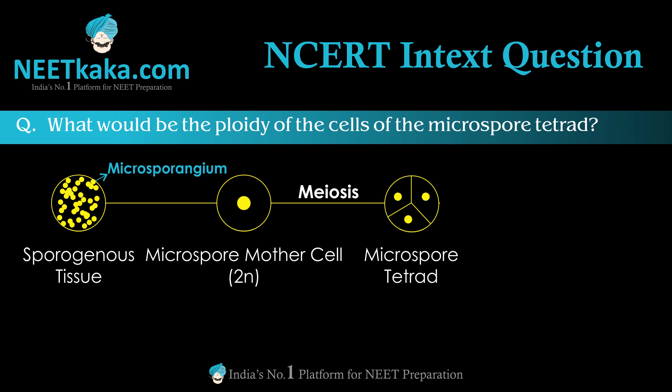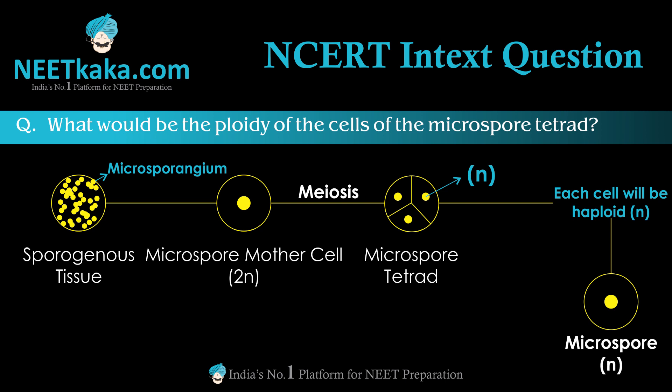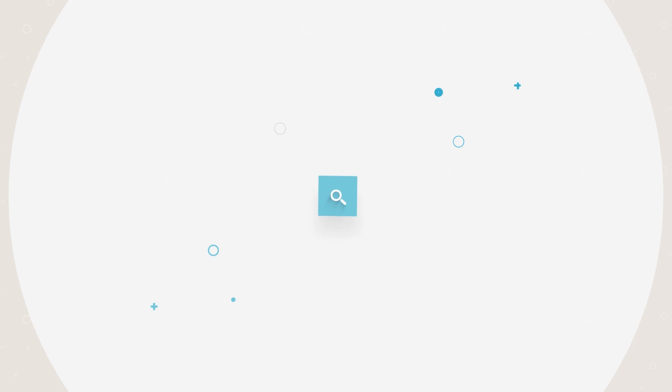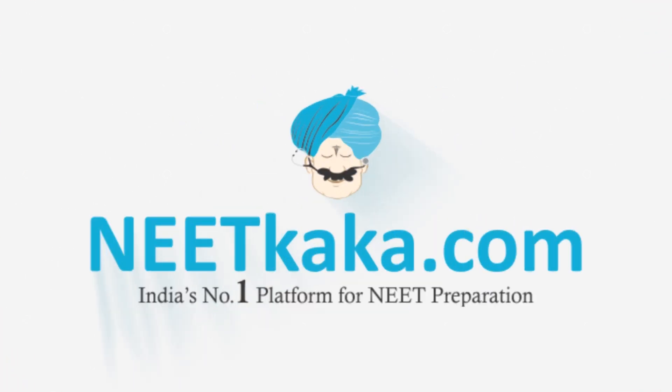After meiosis, we get four spores and all spores are haploid. So the ploidy of each cell of the tetrads will be N, that is haploid. Every cell of the tetrad will be haploid. We will have 4 cells in the tetrad, but we do not say that is 4N. So the answer is: the ploidy of the cells of the tetrads would be N — haploid.